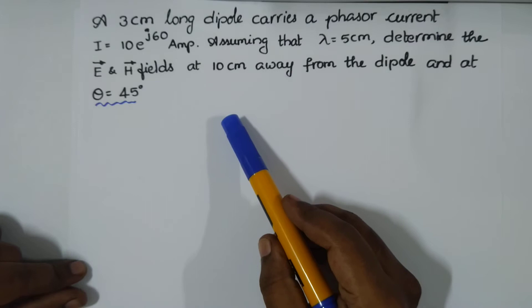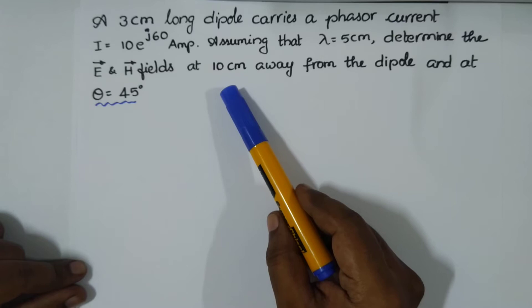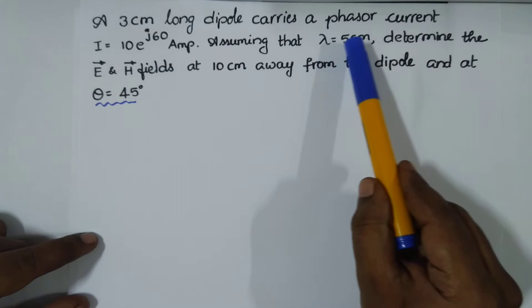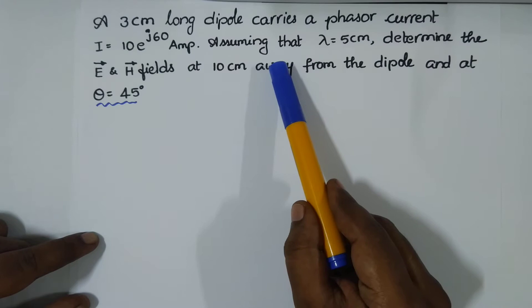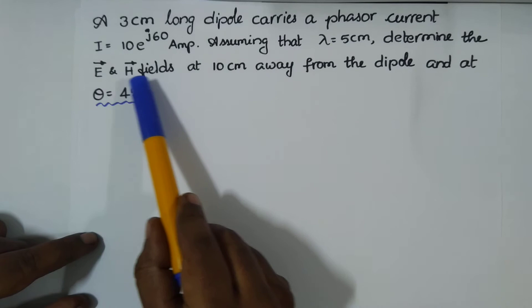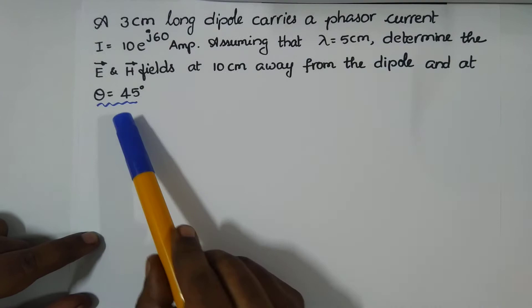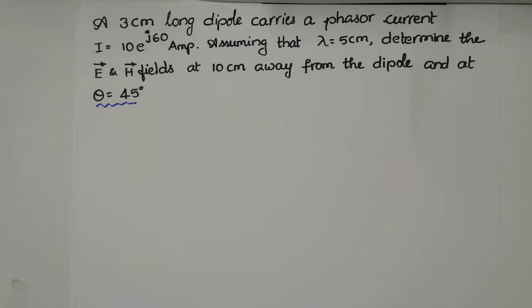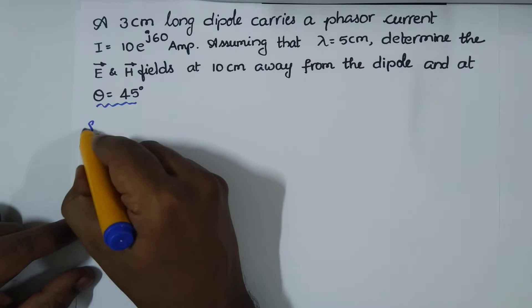Greetings. Here we have a question from linear wire antennas, taken from the exercise problems of 'Antenna Theory: Analysis and Design' by Balanis, 4th edition, page 227, question 4.43. A 3-centimeter long dipole carries a phasor current I = 10e^(j60) amperes. Assuming lambda equals 5 centimeters, determine the electric and magnetic fields 10 centimeters away from the dipole at theta = 45 degrees.